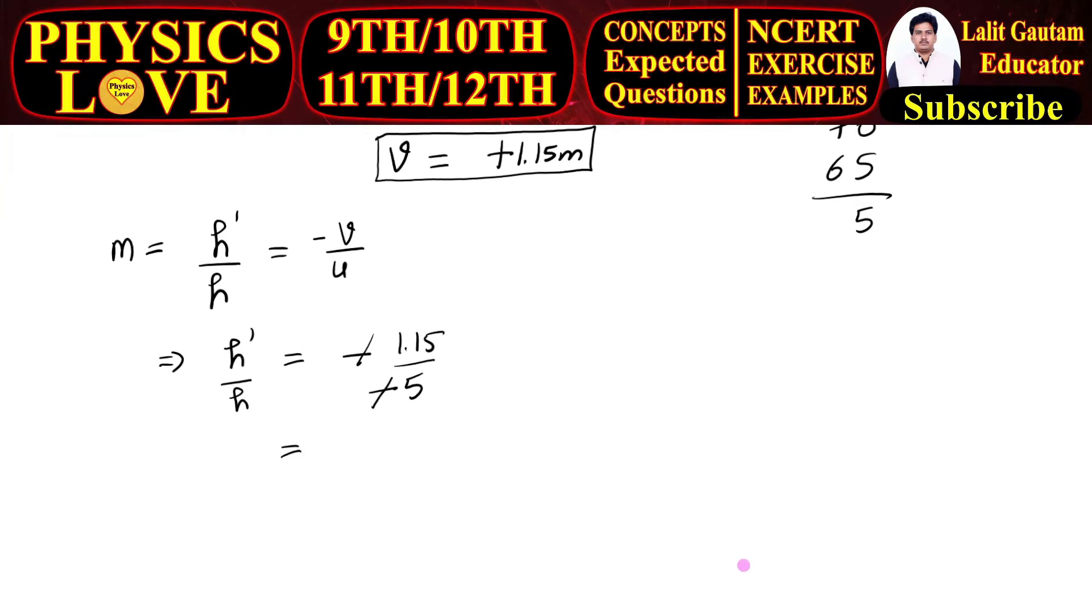And we obtain the value of h dash by h, or you can say magnification, that is 5 cancels, now it is 115 by 500, which is 23 by 100. So it is 0.23, so linear magnification is positive 0.23.